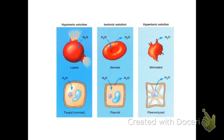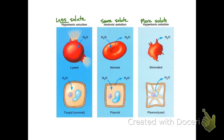In cells, solutions are named for their solute concentration. Hypotonic means low solute. Isotonic means the same amount of solute inside and outside the cell. Hypertonic means excessive amounts of solute outside the cell versus inside. This is a comparison of where solute is greater and where it is less. In a hypotonic solution, there is more water outside the cell than inside. In isotonic, it's the same. In hypertonic, there is less water outside the cell than inside.